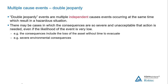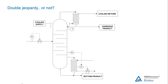Double jeopardy events are not the same as common mode failures or common cause failures. In common cause failures, there is an identifiable common association which is at the heart of the failure of two or more parts of the process. In double jeopardy events, there is no such association — the causes of failure are completely independent. In common cause failures, there is an identifiable common association or common mode which causes the failure of two or more parts of the process.